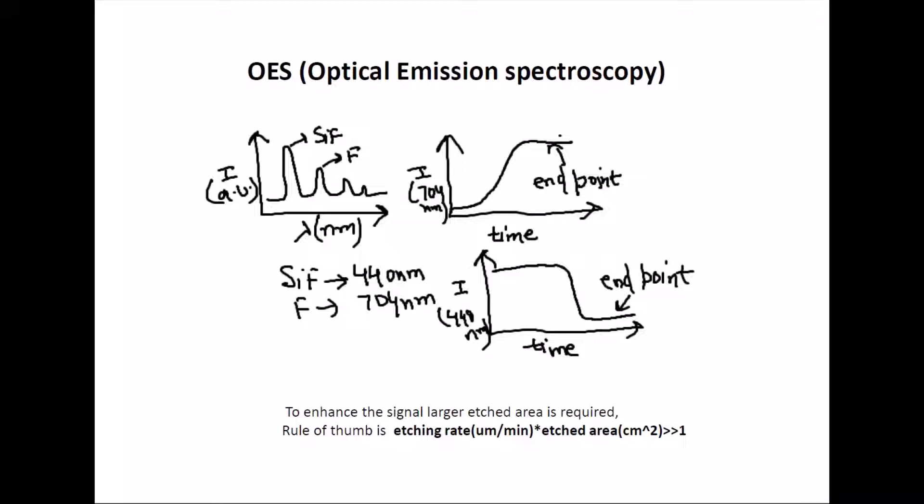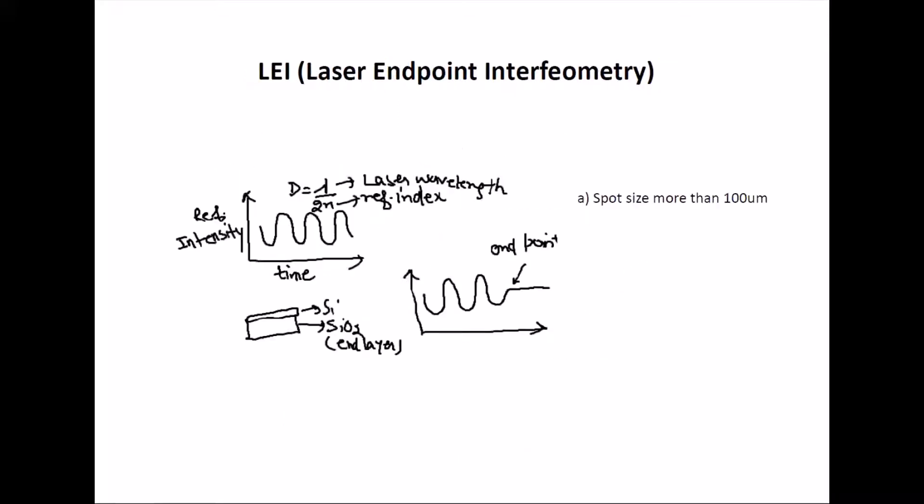The Optical Emission Spectroscopy works in this way. There is only one condition: you must have good signal to noise ratio. Chambers have a lot of areas so it does not matter, but if you want to watch some devices it becomes very hard. The rule of thumb is your etching rate times etched area in cm² should be greater than 1.